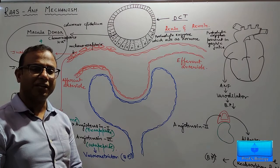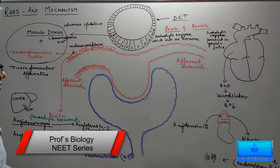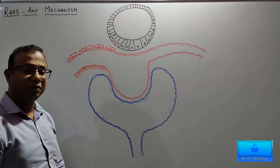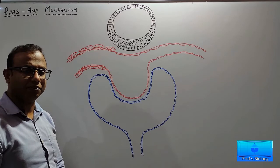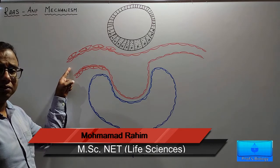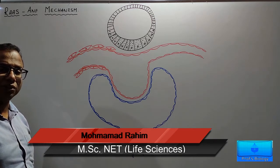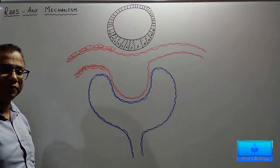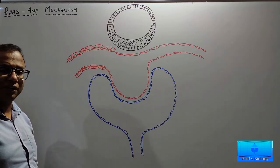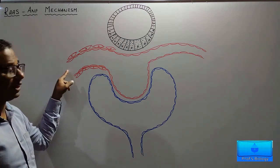Hello students, in today's class we'll discuss the RAS and ANF mechanisms. Let us begin with our study of the RAS mechanism. RAS mechanism ensures there is a normal flow of blood to the kidneys and normal formation of glomerular filtration. Whenever blood pressure or blood supply to the kidney goes down, the RAS mechanism makes sure that the kidney gets enough blood.